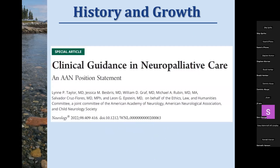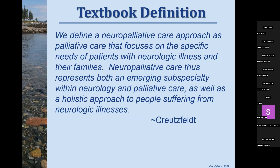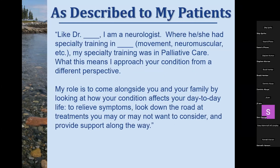Just last year, the Neurology Journal came out with clinical guidance on neuropalliative care, starting to develop standards of care — a great article covering prognostic uncertainty, different approaches, and ethics. The textbook definition from Dr. Creutzfeld and Dr. Holloway's book defines neuropalliative care as a palliative care approach focusing on the specific needs of patients with neurologic illness and their families, representing both an emerging subspecialty and a holistic approach to people suffering from neurologic illnesses.